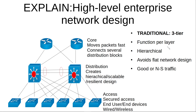The traditional three-tier design for a campus network includes a core layer that moves packets really fast, a distribution layer that creates a hierarchical, scalable, and resilient design. The distribution layer talks Layer 3 to the core and Layer 2 to the access layer. Your access layer provides connectivity to end users and devices — wired or wireless — and you can enforce security here.